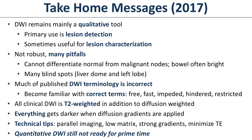Diffusion-weighted imaging will make some things look brighter, but they only look brighter relative to background. Everything gets darker on diffusion-weighted imaging. When you say that something brightens up, it doesn't really brighten up — it just gets less dark. Everything gets darker; some things get more dark, and some things get less dark.